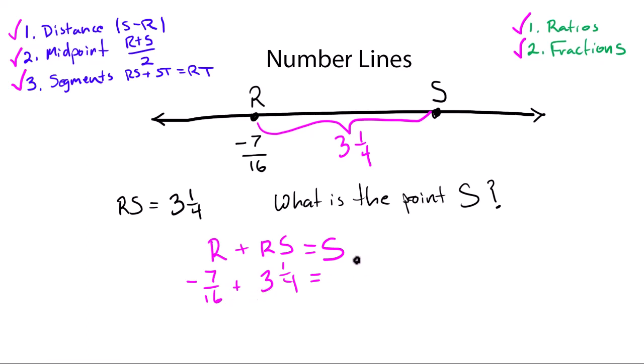This is really minus seven sixteenths plus 52 sixteenths. Now that I have both fractions expressed as common denominators, I can add my numerators. 52 minus seven is 45 sixteenths.